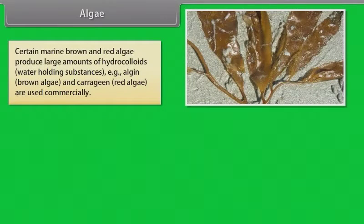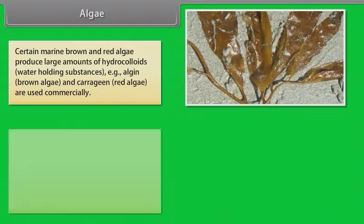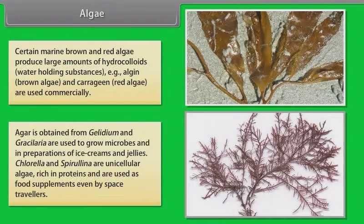Certain marine brown and red algae produce large amounts of hydrocolloids, water-holding substances. That is, algin from brown algae and carrageenan from red algae are used commercially. Agar is obtained from Gelidium and Gracilaria, are used to grow microbes and in preparations of ice creams and jellies. Chlorella and Spirulina are unicellular algae rich in proteins and are used as food supplements even by space travelers.